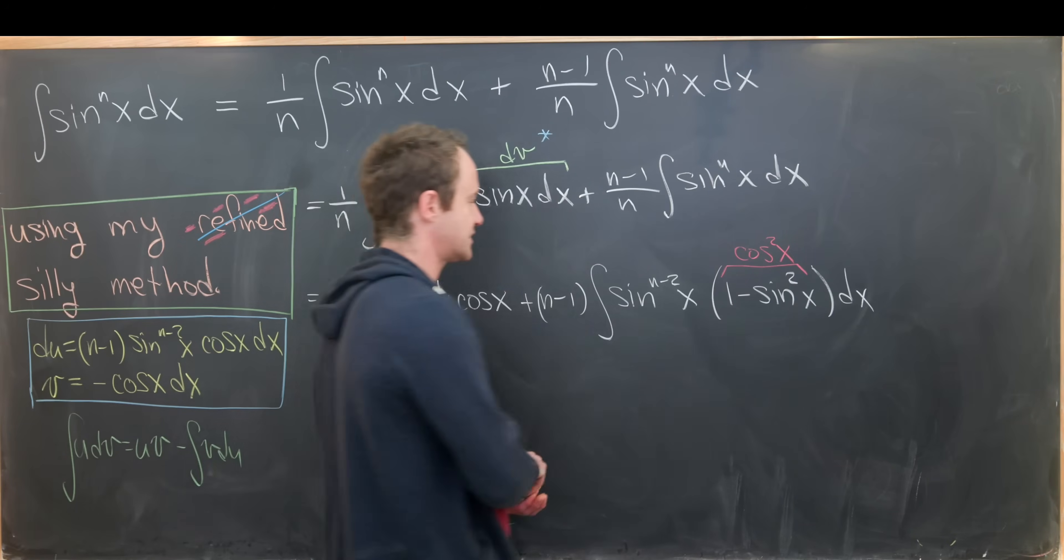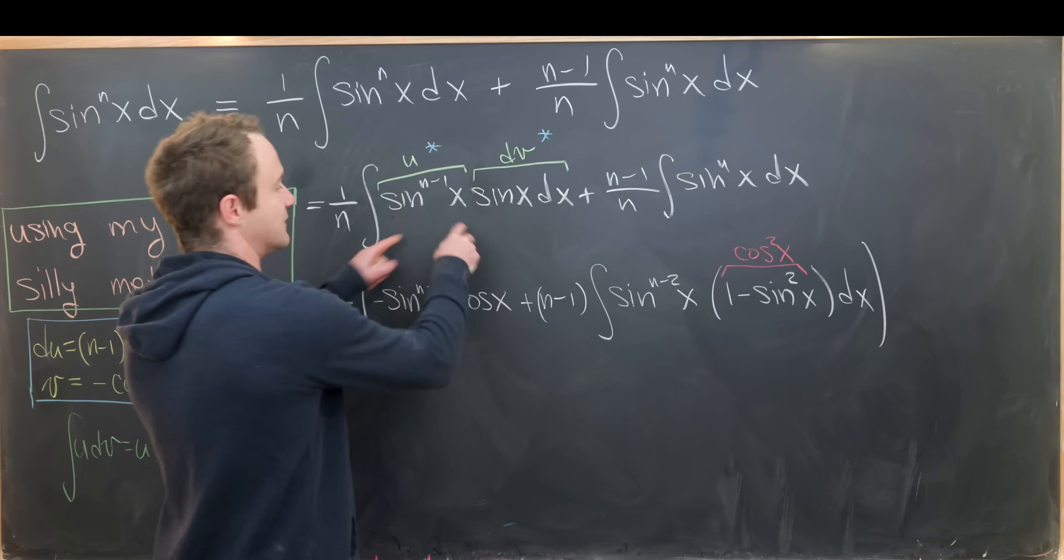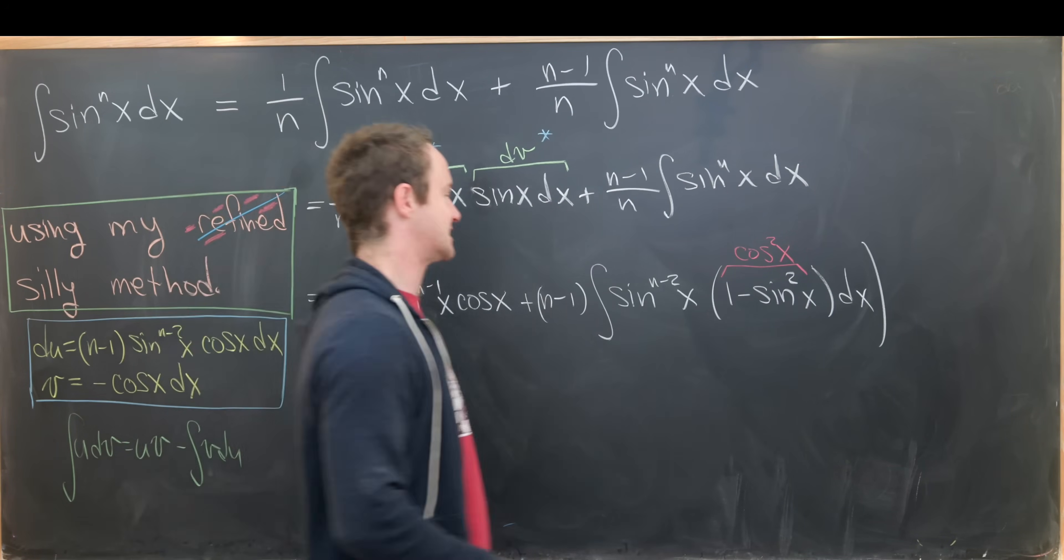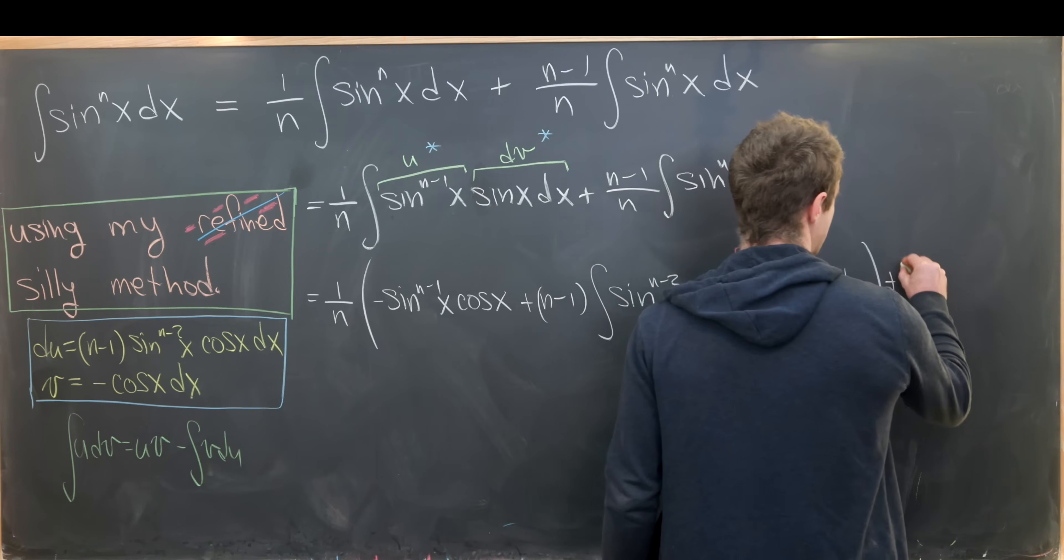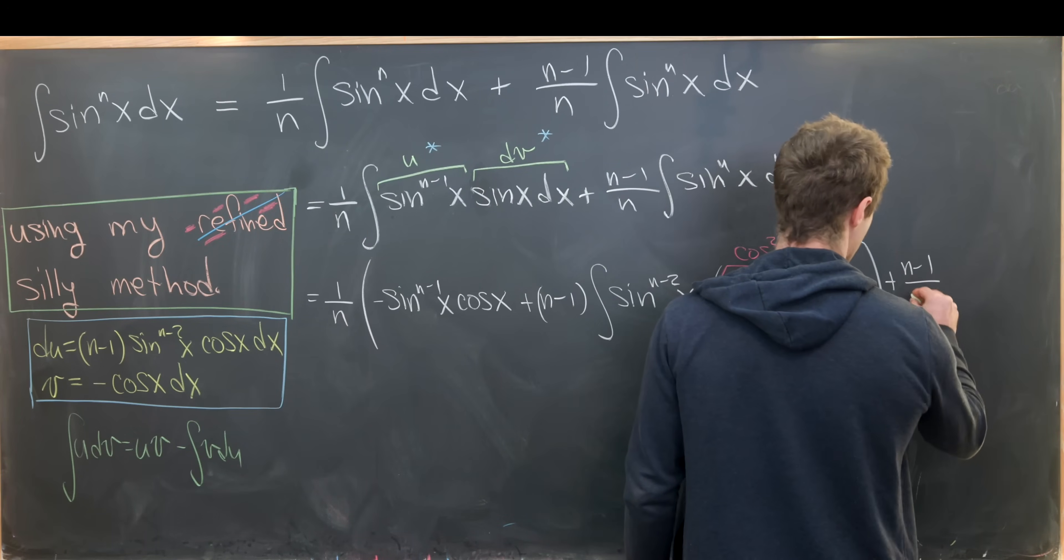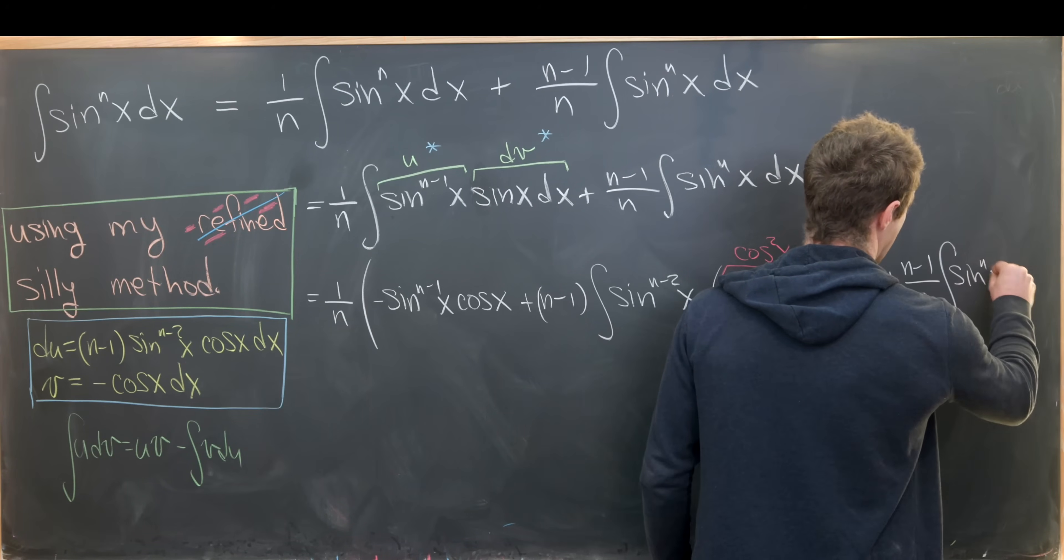Okay, so that's starting to look good. That's all of this first integral, but we still have the second integral. So this is plus n minus one over n times the integral of sine n x dx.